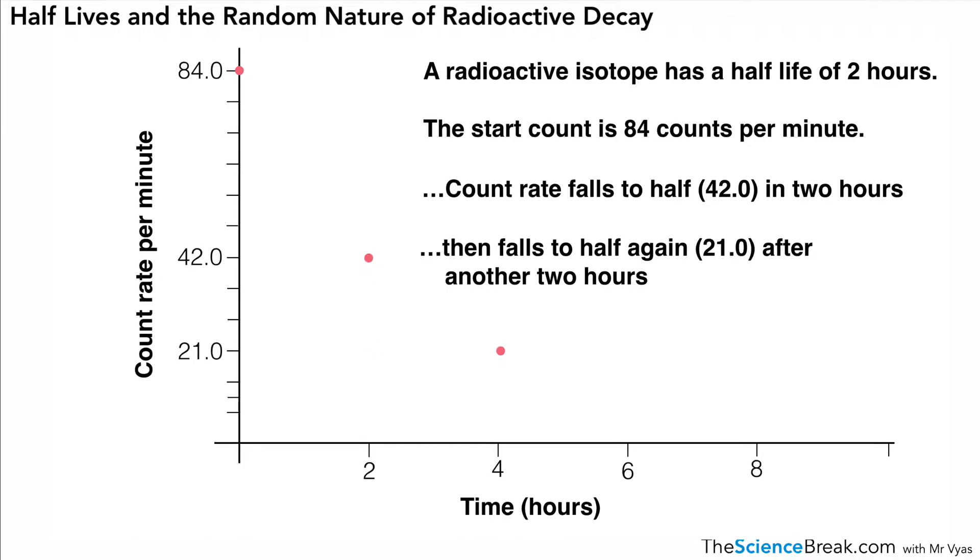We can then work out half of 21 again, which is 10.5, and plot that at six hours. We now have enough points to draw our curve. We join those dots up with a smooth curve like this. The main point is every time you show a decay curve like this, it's always going to be a downwards curve. It might be steeper or less steep, but it will always be a downwards curve like this.